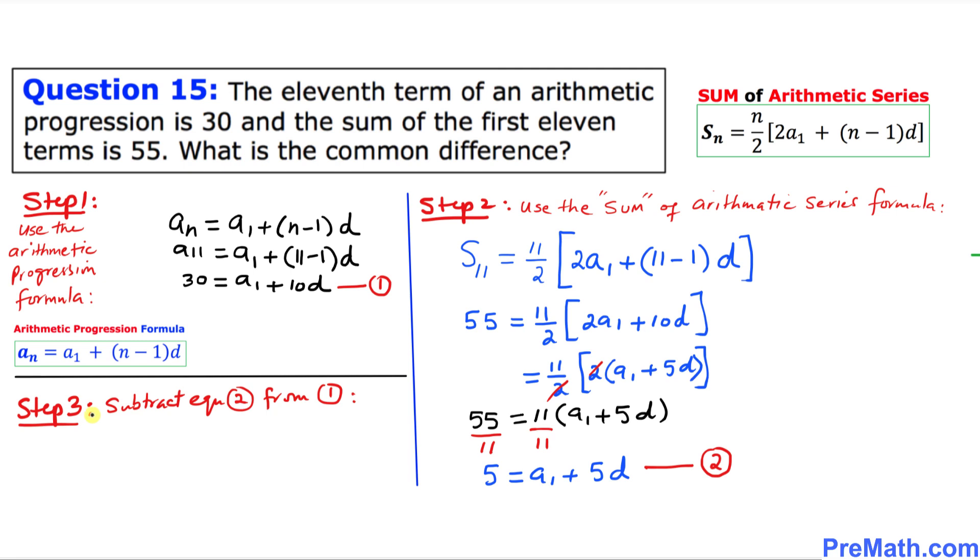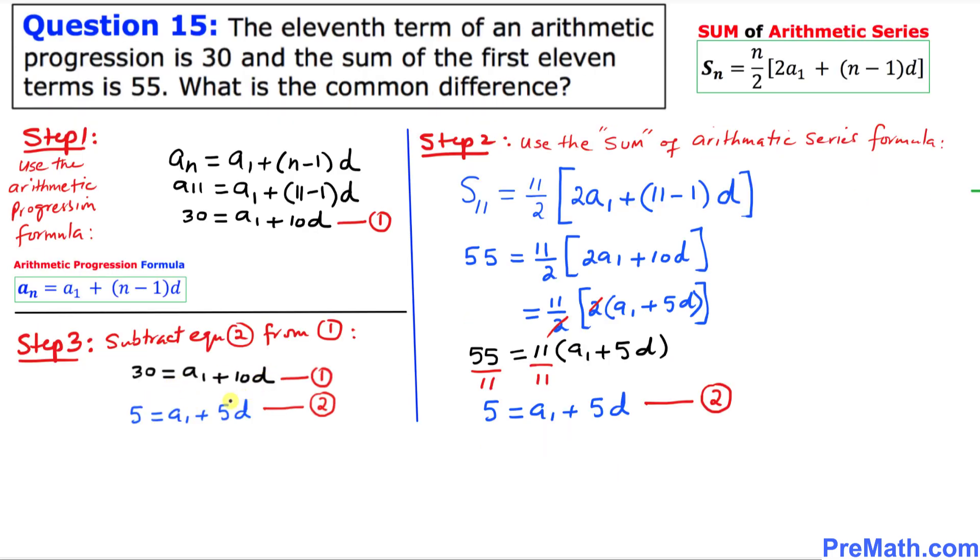And finally in step 3, we are going to subtract equation number 2 from equation number 1. Let's go ahead and subtract. We are going to change the sign. This positive 5 becomes negative 5, negative A1. And this A1 and negative A1 cancels out. So we got 30 minus 5 is 25 equals 10D minus 5D is 5D.